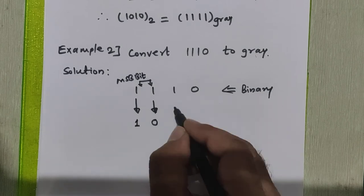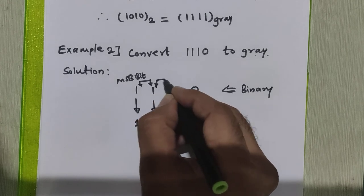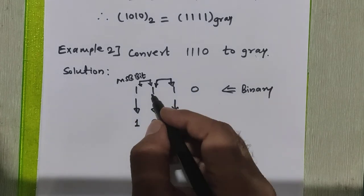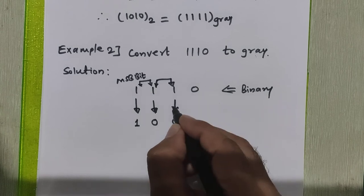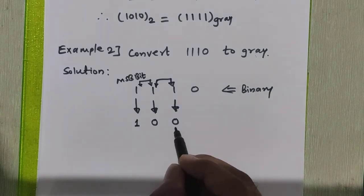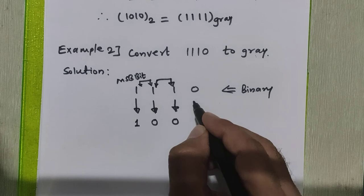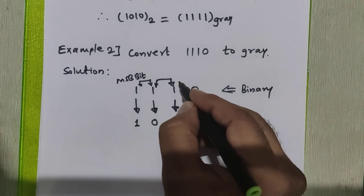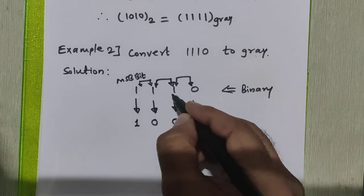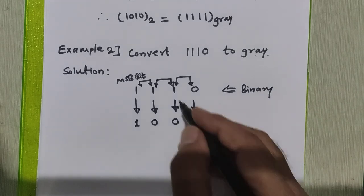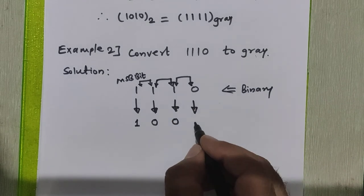To get the next grey code bit, we add the second bit with the third bit. Again, 1 plus 1 is 0 with carry 1 — the carry is ignored and the sum is written here. To get the last bit of this grey code, we add the third bit with the fourth bit of binary, and the addition is 1 plus 0 is 1.